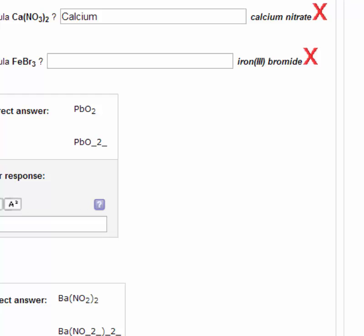Total negative 3, and the 1 iron needs to have a positive 3 charge. Therefore, iron(III) bromide is correct.